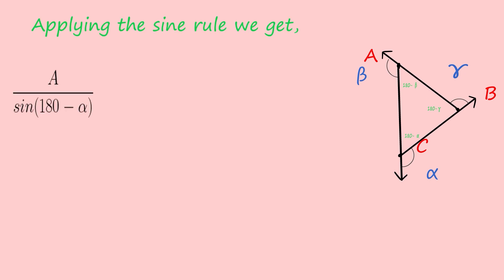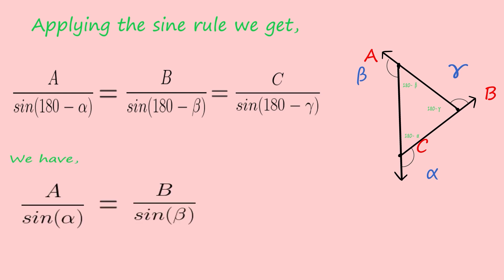Now, applying the sine rule in the triangle, we get A by sin 180 minus alpha equals B by sin 180 minus beta equals C by sin 180 minus gamma. So we have A by sin alpha equals B by sin beta equals C by sin gamma.